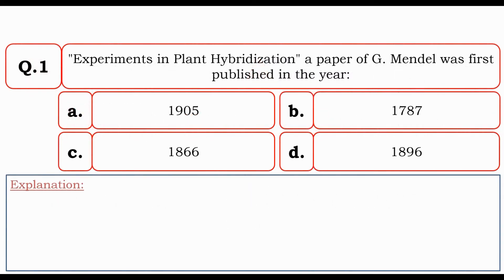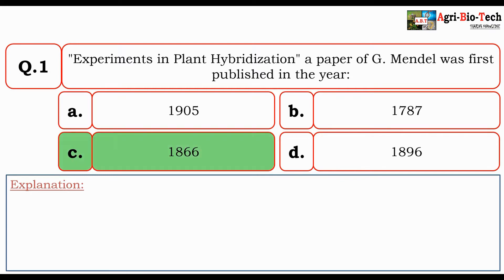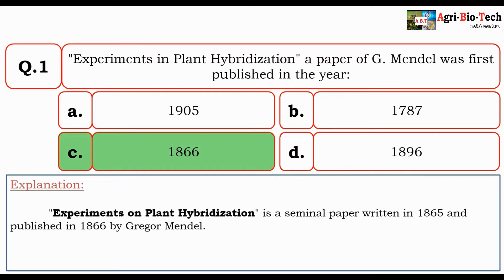The first question is: 'Experiments in Plant Hybridization,' a paper of Mendel, was first published in the year — 1905, 1787, 1866, or 1896? The correct answer is 1866. Experiments on Plant Hybridization is a seminal paper written in 1865 and published in 1866 by Gregor Mendel.